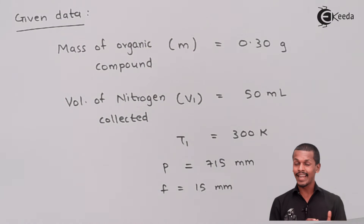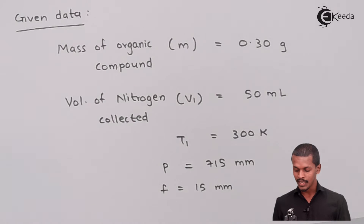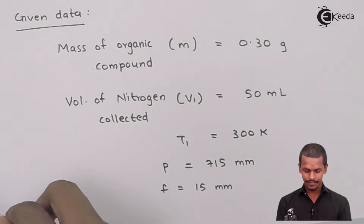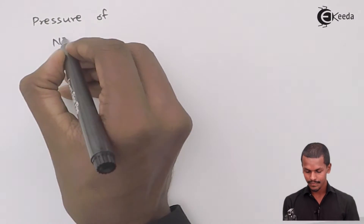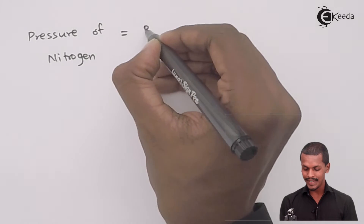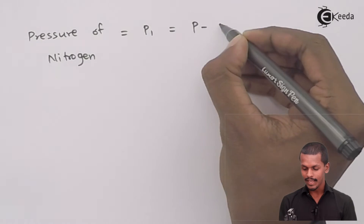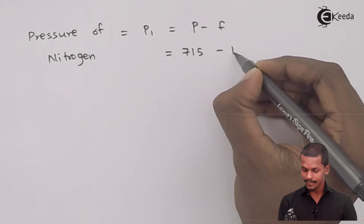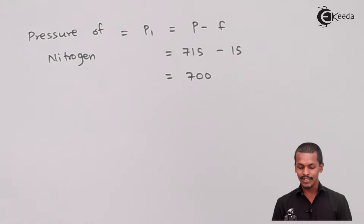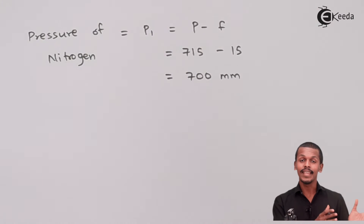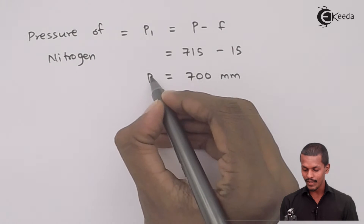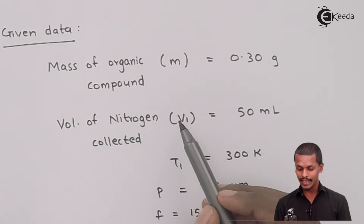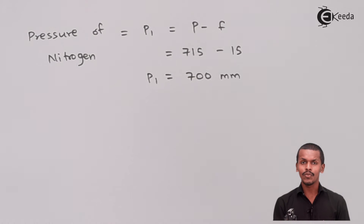The external pressure P is not the actual pressure of the nitrogen. We need to calculate the pressure of nitrogen separately. The formula is P1 = P − F, so P1 = 715 − 15 = 700 mm Hg. This is the actual pressure maintained by the nitrogen. Now that we have P1, V1, and T1, we can equate using the ideal gas equation.